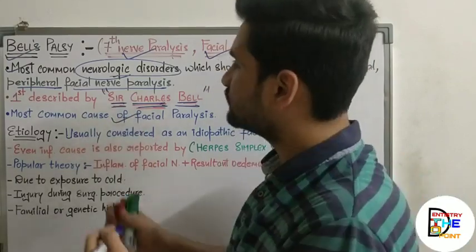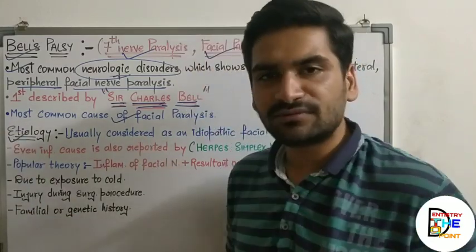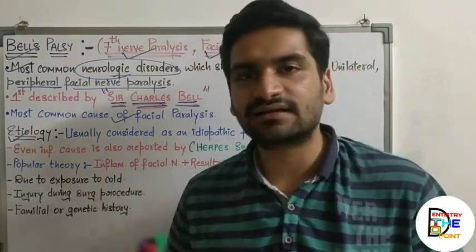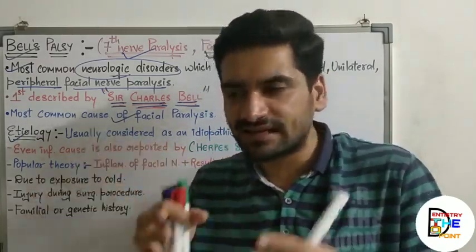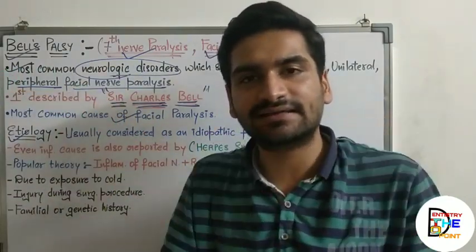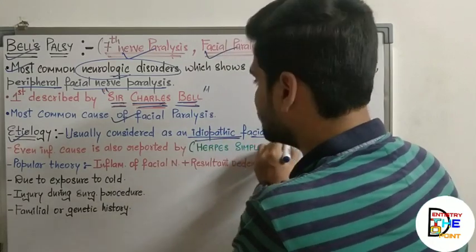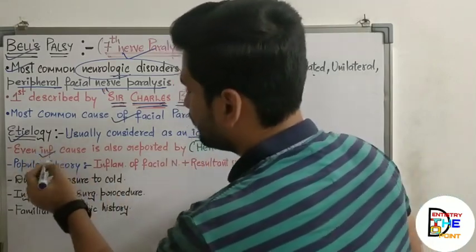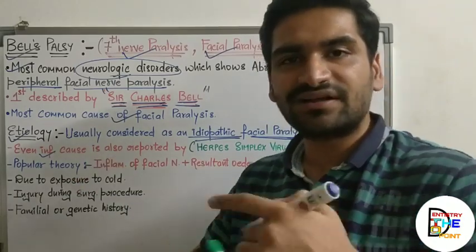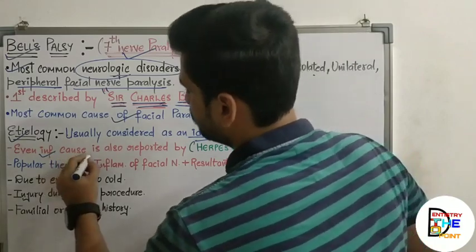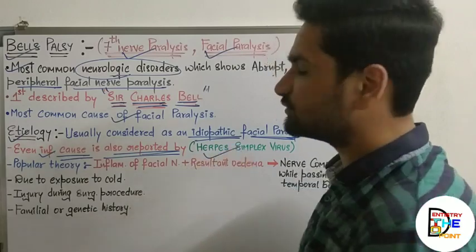Moving on to the etiology — it is considered as an idiopathic facial paralysis, meaning there is no definitive cause established for why the facial nerve gets paralyzed. Even infectious causes are seen; for example, herpes simplex virus infection occurring along the course of the facial nerve is also responsible for the paralysis.